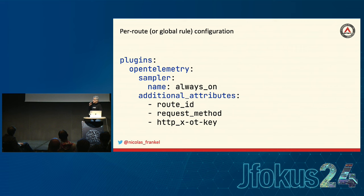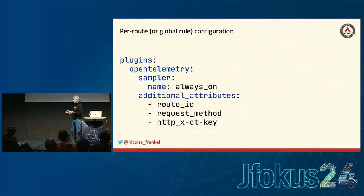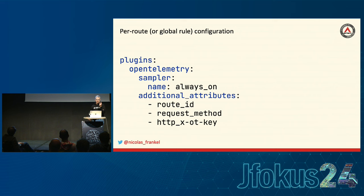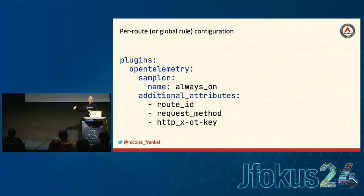The entry point is the most important part because it generates the trace ID, the first span ID, and you need sampling here. You don't want every request to create a trace — if you have 10 million requests per day, you'll have a very large budget for storing traces. In the demo I have the sampler always on, but normally you should sample — perhaps 1% or 2% depending on your volume, adjusting higher when deploying new versions.